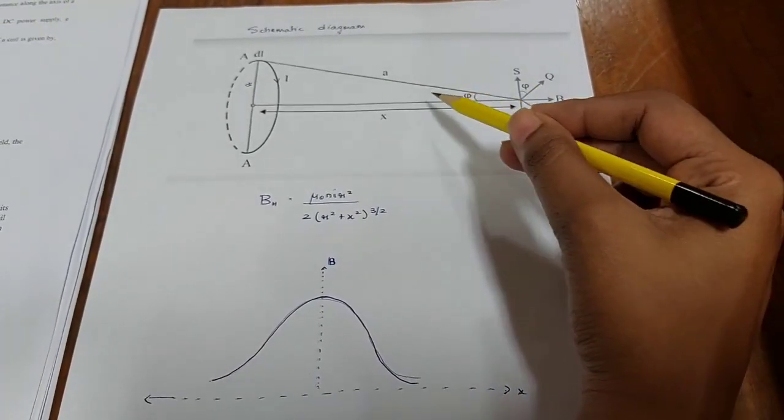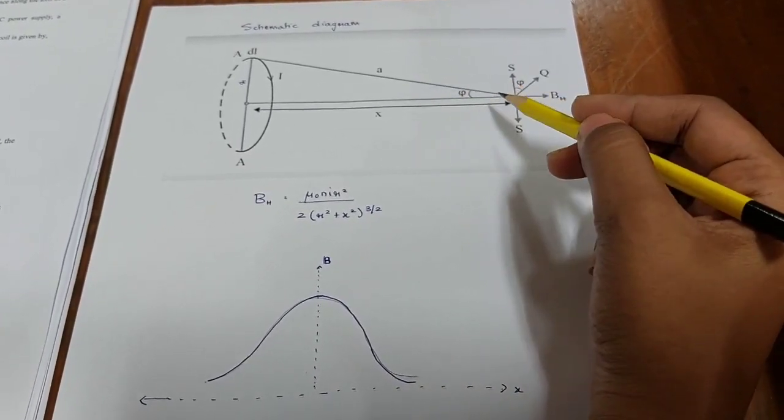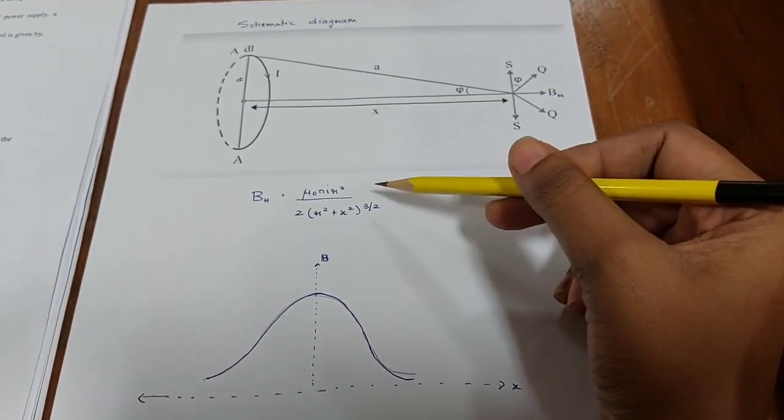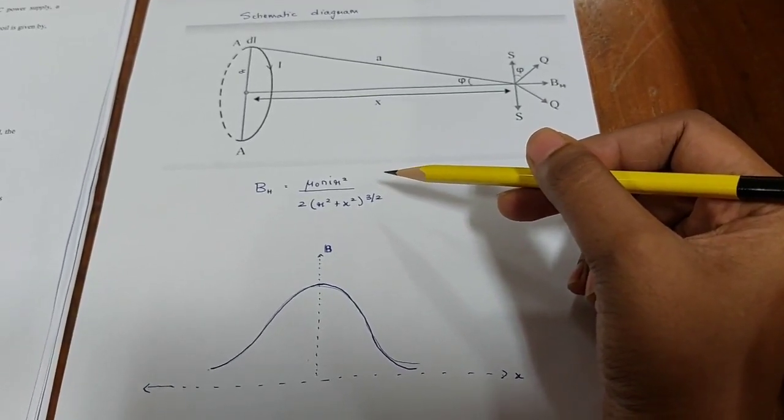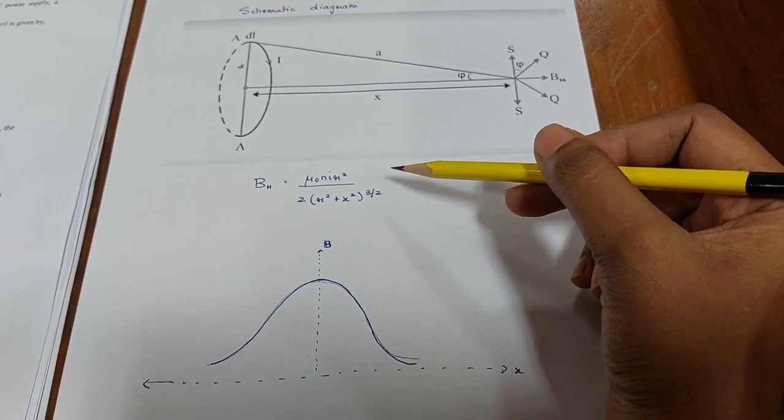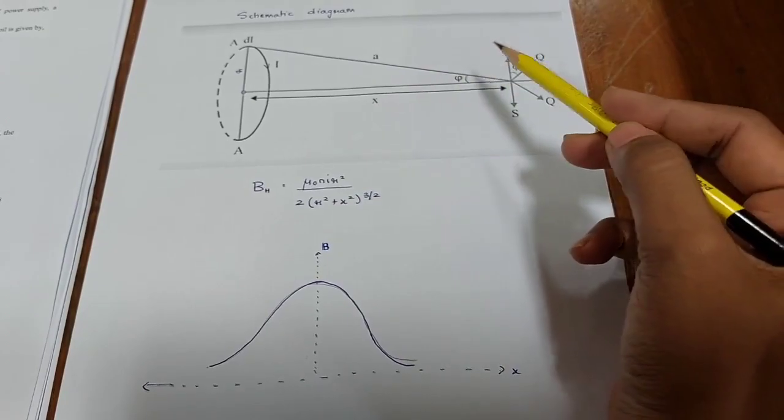Using Biosavart's law, we can find an expression for the magnetic field at any point in the axis which is given by µ₀ n i r² by 2 into r² plus x² the whole raised to the power 3 by 2, where µ₀ is the magnetic permeability of free space, n is the number of turns, i is the current passed, and r is the radius of the coil.